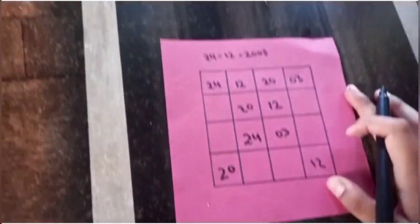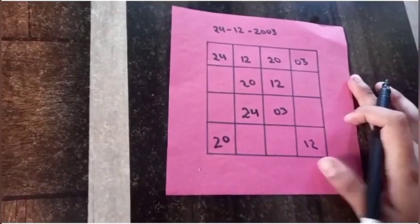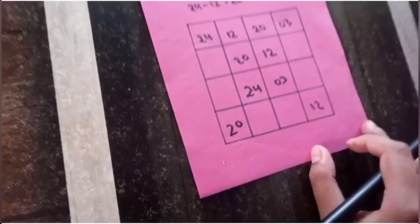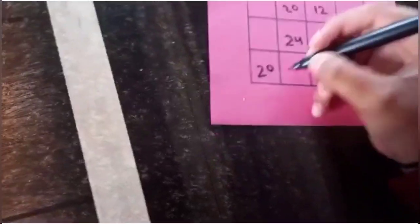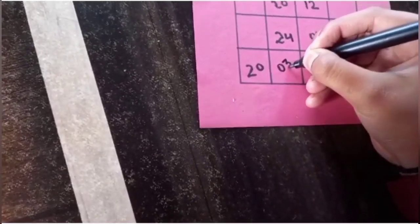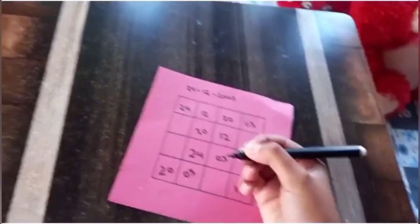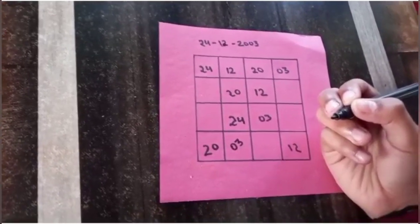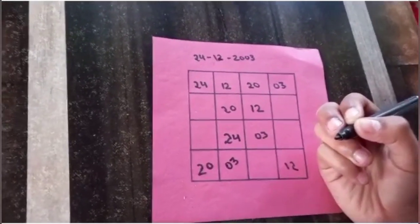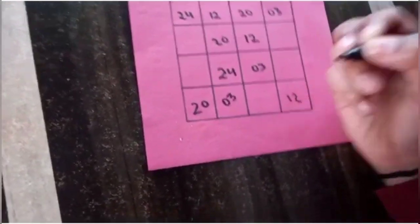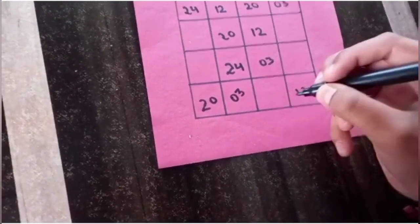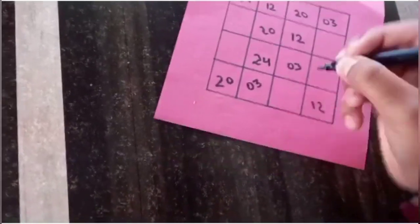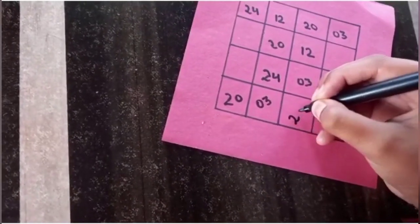Now, let's fill up the other boxes. That is 0, 3. And yes, one thing which we all have to remember is that the number should not be repeated in the same row or column. And what's the remaining number? It is 24.